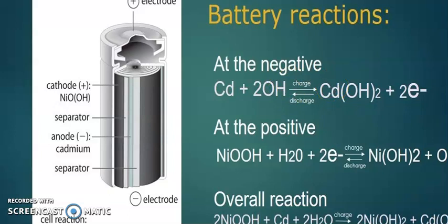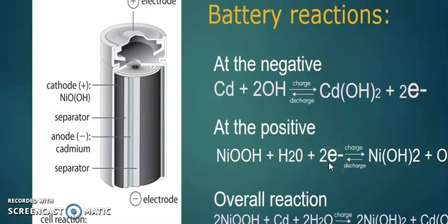The next step is the cathodic reaction. The cathode — nickel oxide hydroxide — is the electrode where reduction reaction takes place. The electrons released by the anodic compartment are involved in the reduction reaction at the cathodic compartment.